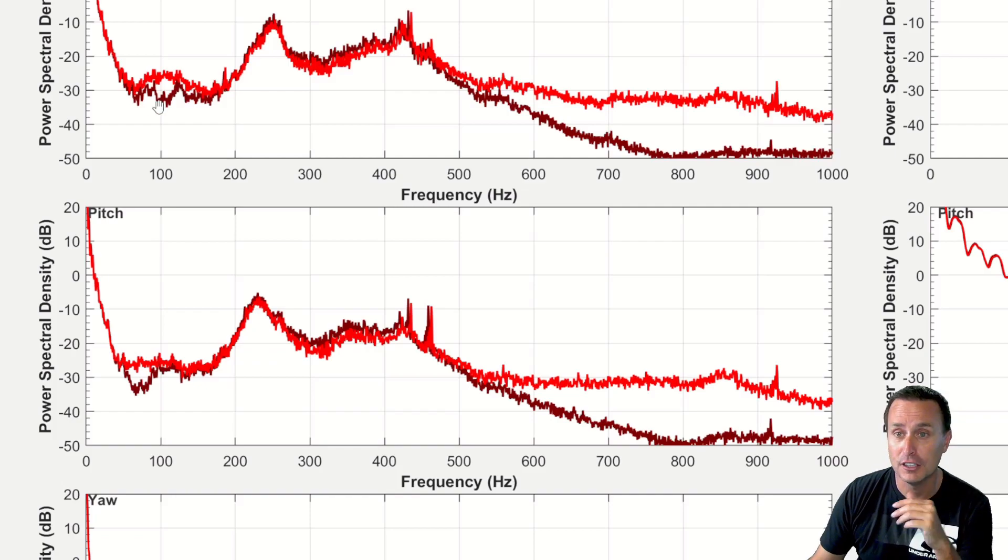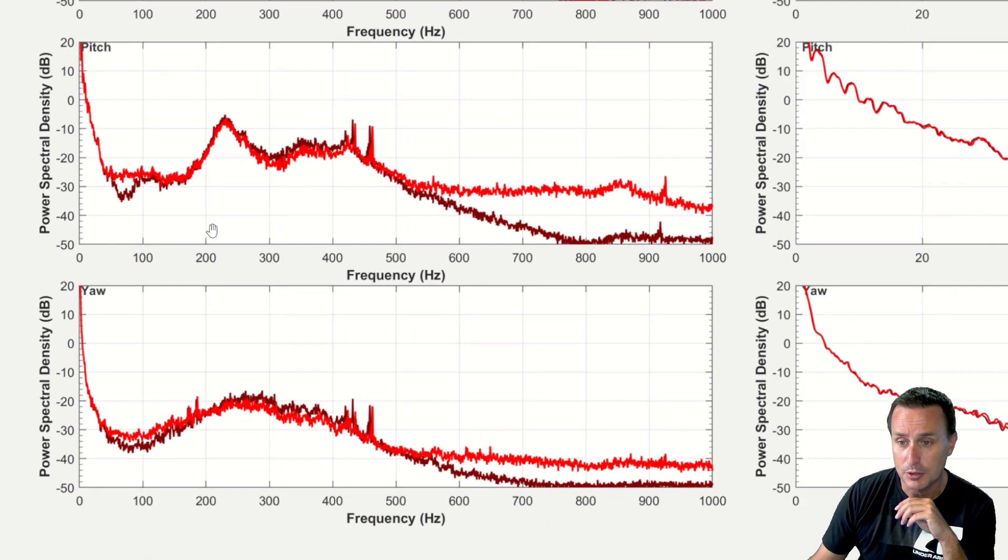For the exact same flight—full flight, flips, rolls, prop wash moves, full throttle, step throttles, all kinds of stuff—you can see that the BMI270 is just producing a little bit less noise in that region, which is helpful.